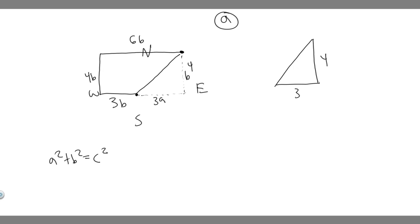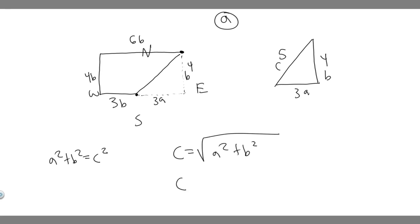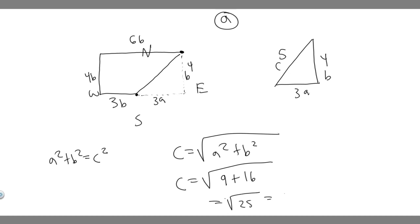By the Pythagorean theorem, we can go ahead and solve. You might recognize this as a 3-4-5 triangle — if you have three and four, the hypotenuse is automatically five. But we can prove it: c = √(a² + b²) = √(3² + 4²) = √(9 + 16) = √25 = 5. So the length is five blocks.